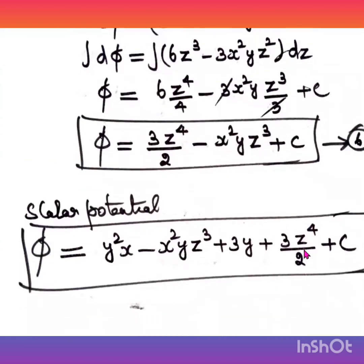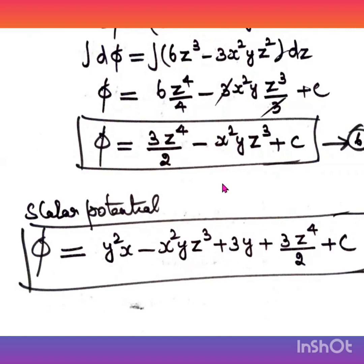The scalar potential is obtained by combining Equations 4, 5, and 6. Write each term only once: repeated terms like y squared x and x squared yz cubed appear in multiple equations, so write them once. Terms 3y and 3z to the power 4 divided by 2 appear only once. Therefore, phi equals y squared x minus x squared yz cubed plus 3y plus 3z to the power 4 divided by 2 plus c.